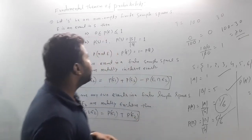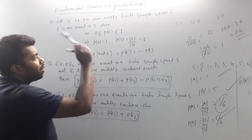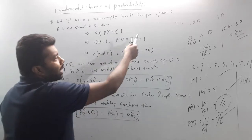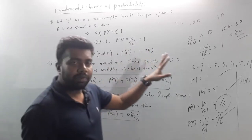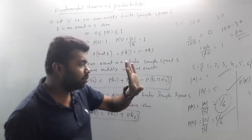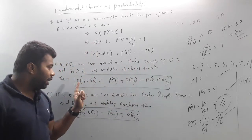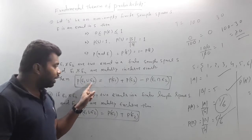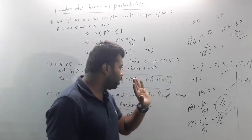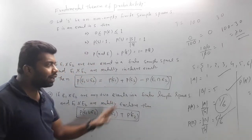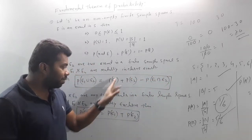So to remind you: P of E, probability answer lies between 0 and 1. P of S is equal to 1. P of not E is equal to 1 minus P of E. And for mutually inclusive events, P of E1 union E2 equals P of E1 plus P of E2 minus P of E1 intersection E2. For exclusive events, the intersection term is discarded.